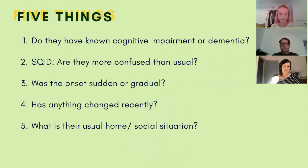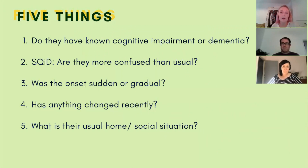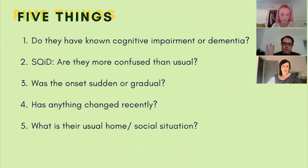Here are five things you should try and find out which will guide your management plan. If the person is really very confused, you might need to ask some of these questions as part of a collateral history. Number one: does this person have a diagnosis of dementia or any cognitive impairment — are they normally confused at all? This leads to number two: at the moment, are they more confused than is usual for them? SQUID, the single question in delirium, helps identify whether the confusion is an acute problem. Number three: if they are more confused than usual, try to establish when this started as it may help you pinpoint a trigger.